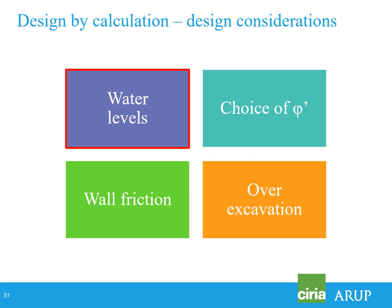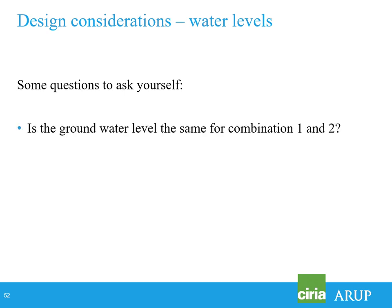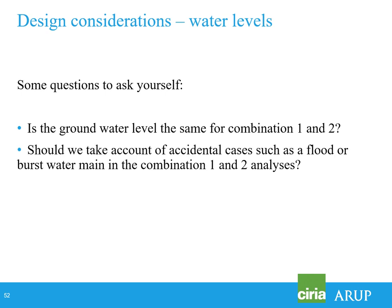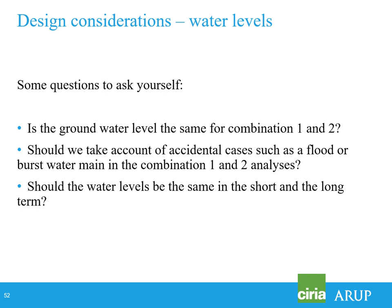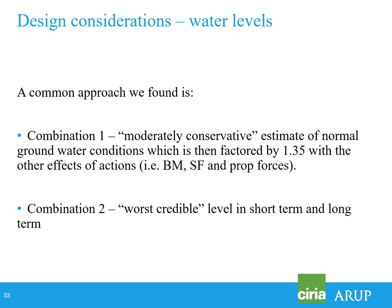Picking up on a few points also related to design by calculation — the first being choice of water level. The choice of water level is fundamental to retaining wall design and one of the most important actions on the wall. Some questions: Is the groundwater the same for Combination 1 and Combination 2? Should we take account of accidental cases such as a flood or burst water main? Should water levels be the same in the short term and the long term? In Combination 1, should we apply a partial factor of 1.35 to the most onerous water level?